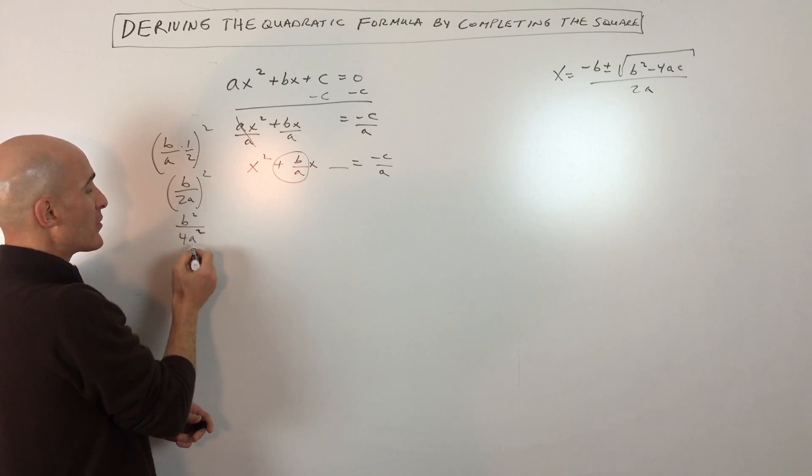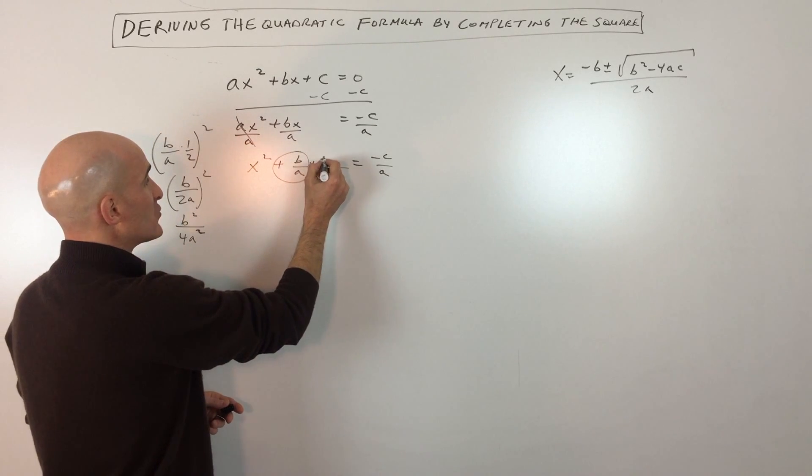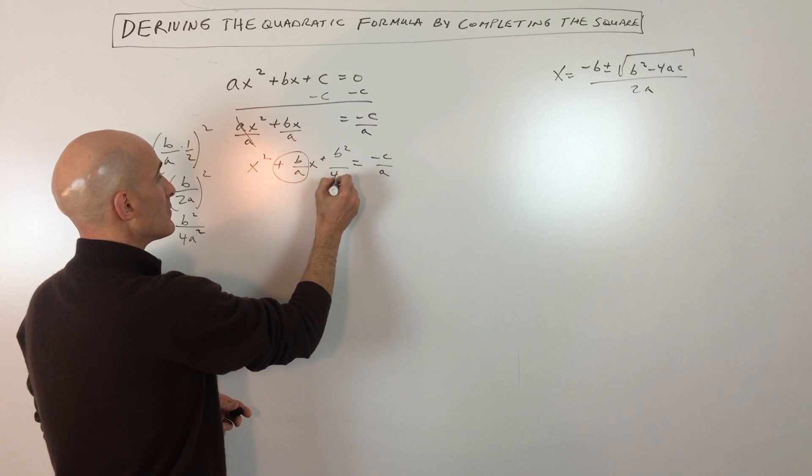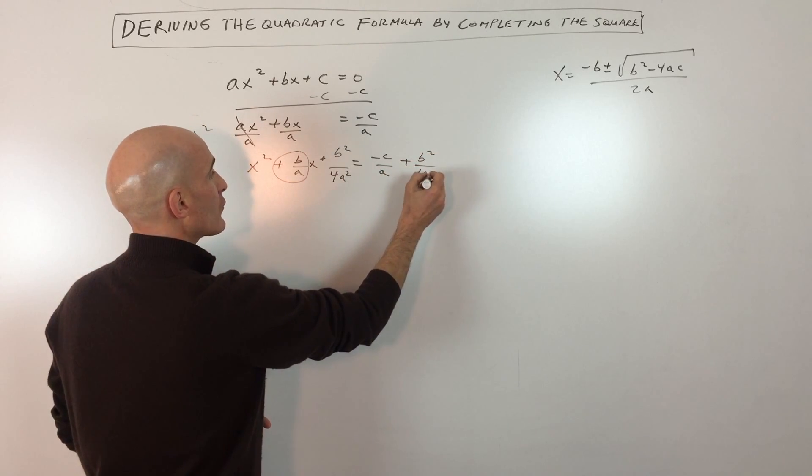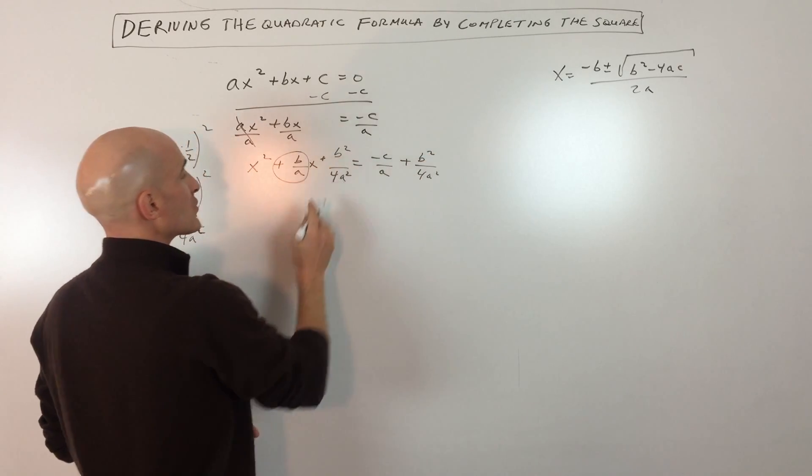So I'm just squaring the numerator and squaring the denominator. And so what I'm going to do is add that to both sides of the equation to keep it balanced. So b squared over 4a squared. So are you with me so far?